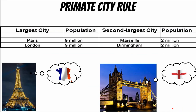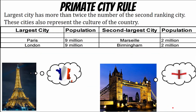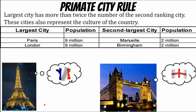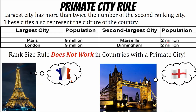Sometimes a country has what is known as a primate city — a city that either represents the culture of the people, or it has more than twice the population of the second city. London and Paris are primate cities. These cities not only dominate the culture and arts of England and France — Paris has 9 million while Marseille, the second largest city, has 2 million. You cannot apply the rank-size rule if a country has a primate city.